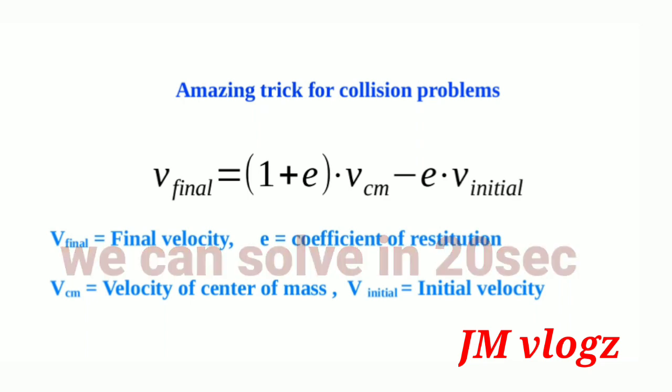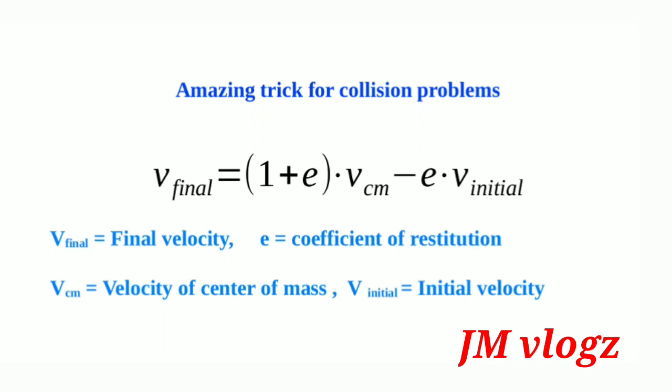We only need to find out the velocity of the center of mass. We know the velocity of center of mass as (m1·v1 + m2·v2) divided by (m1 + m2). The initial velocity is given in the question, and the coefficient of restitution is also given — either as a value, or from a statement indicating elastic, inelastic, or perfectly inelastic collision.